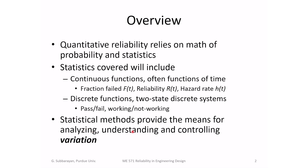For our purposes, statistical methods provide the means for analyzing, understanding, and controlling variation. As I described in the case study, there are always two aspects to characterizing reliability: one is a statistical aspect, the other is physics of failure, and both have to go hand in hand — one is insufficient by itself. Our focus in this class will be more on the statistical method, because physics of failure often requires advanced knowledge gained in advanced, typically physics-oriented classes.